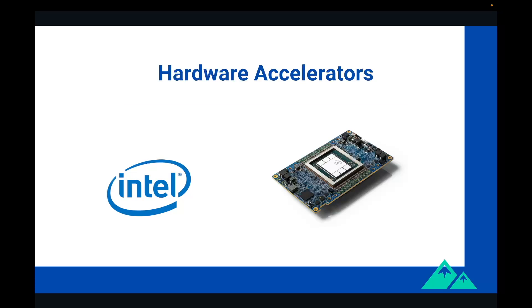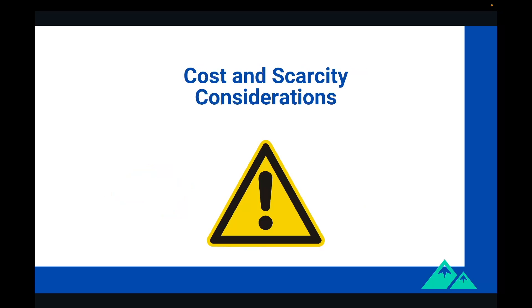Intel also built their own AI chip, called Habana Gaudi, which is a very powerful but very expensive alternative. The hardware accelerators are powerful, but also very expensive and not easy to purchase because of a global semiconductor shortage. Consequently, it is wise to work on optimizing your AI workload as much as possible in order for it to run on smaller hardware.